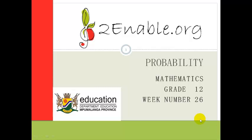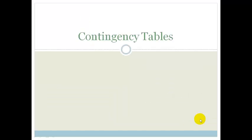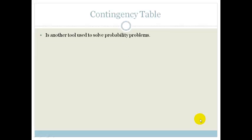Good day grade 12s. Welcome to this next lesson on probability in week 26. In this lesson we're going to learn how to use contingency tables. A contingency table is another tool used to solve probability problems. We've used Venn diagrams and we've used tree diagrams. Now we're going to look at a contingency table.